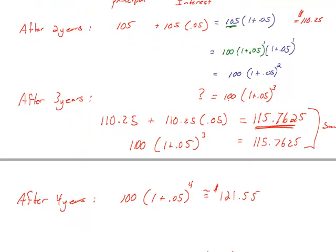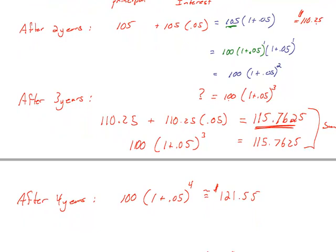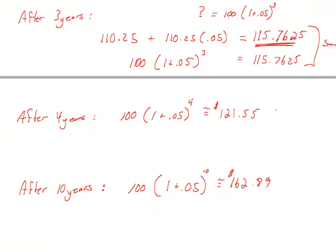And from year 2 to year 3, starting with 110.25, I didn't add $5.25. I added a little bit more. I added roughly $5.51 to my account. So the amount of money I'm adding every year interval is getting a little bit larger.